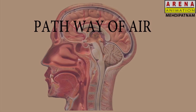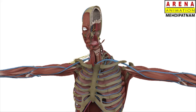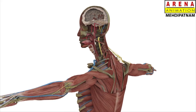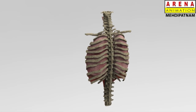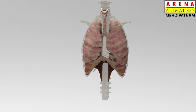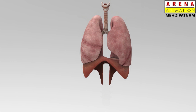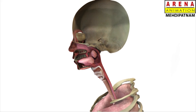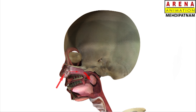In this video we are going to see how the lungs of the human body receive air from the atmosphere through the respiratory system. Air usually enters into the body through the mouth and nose.